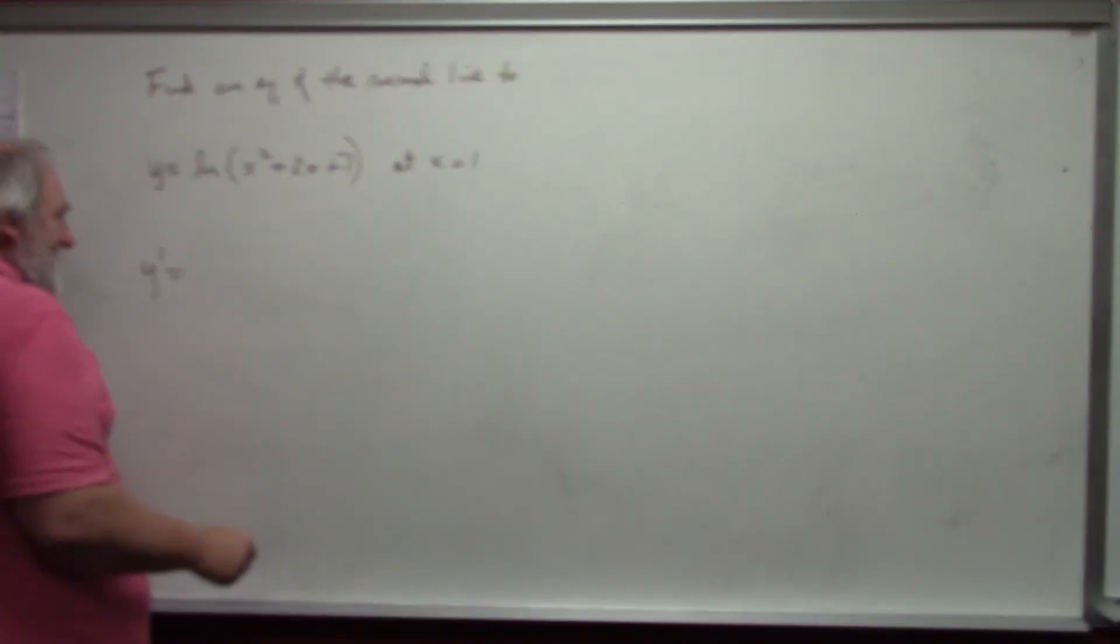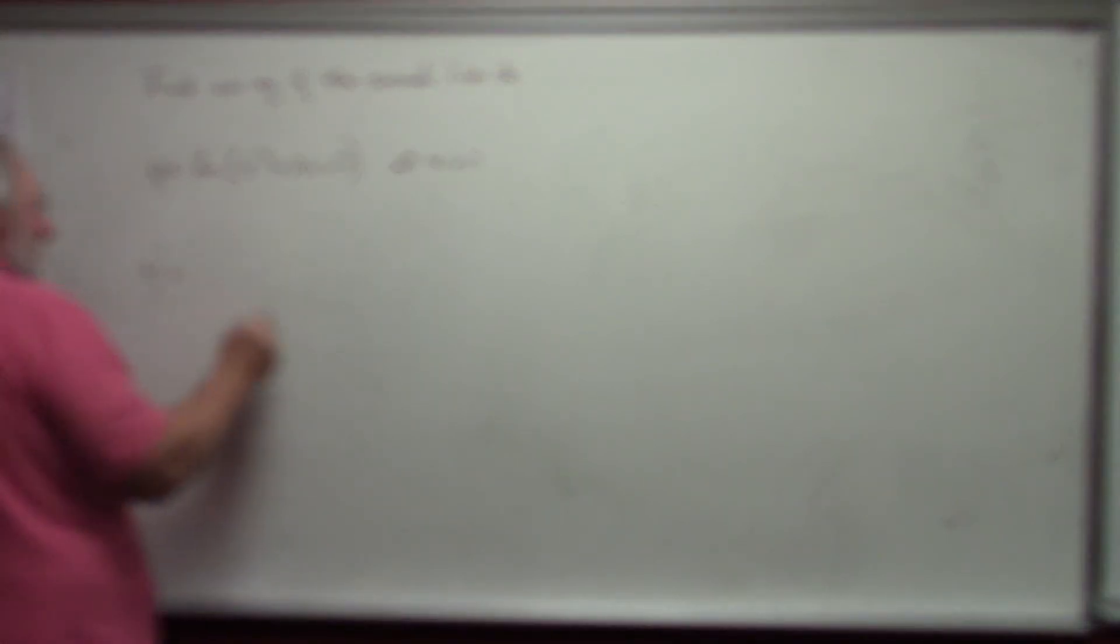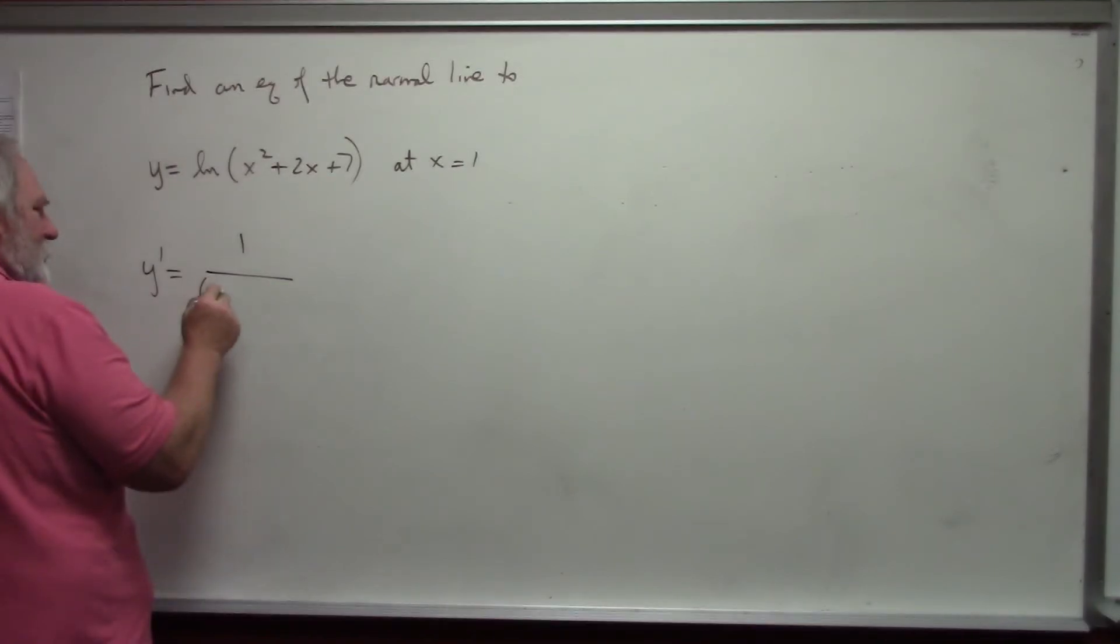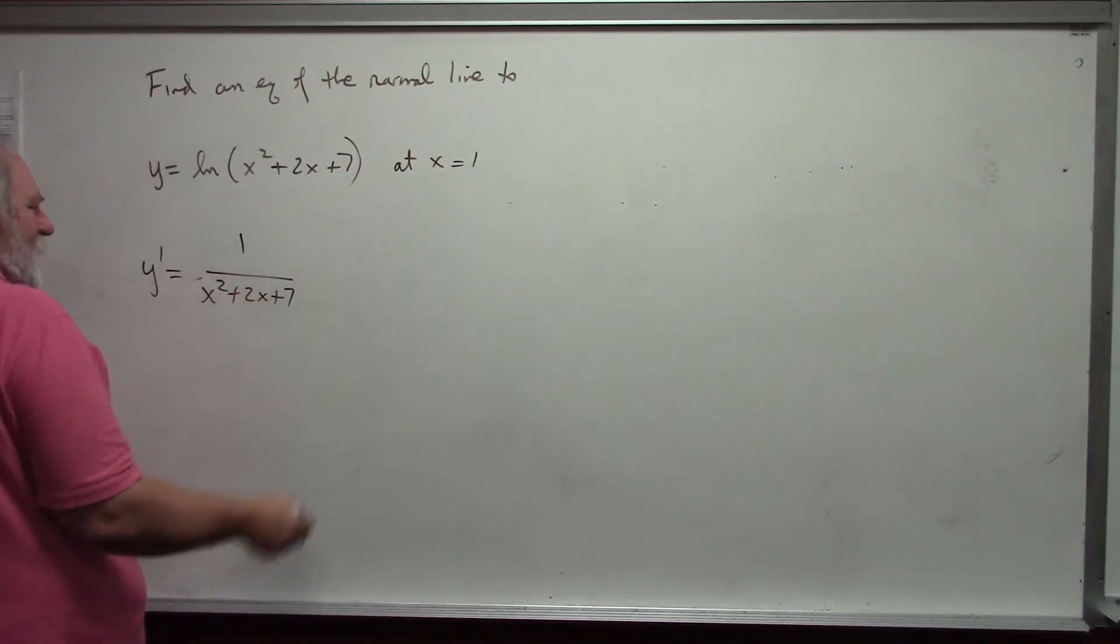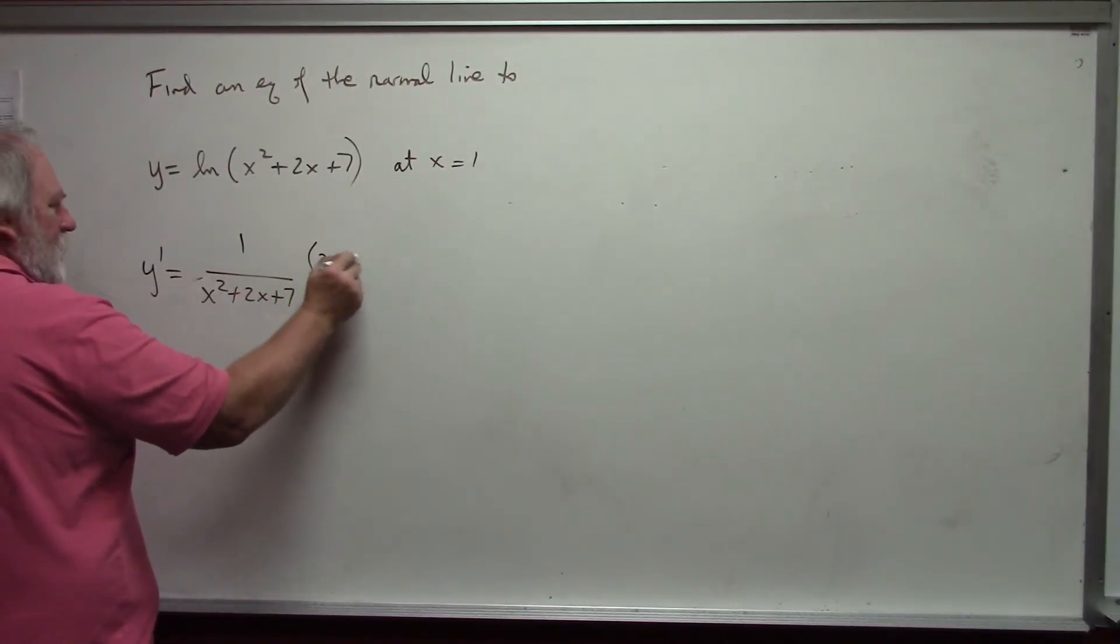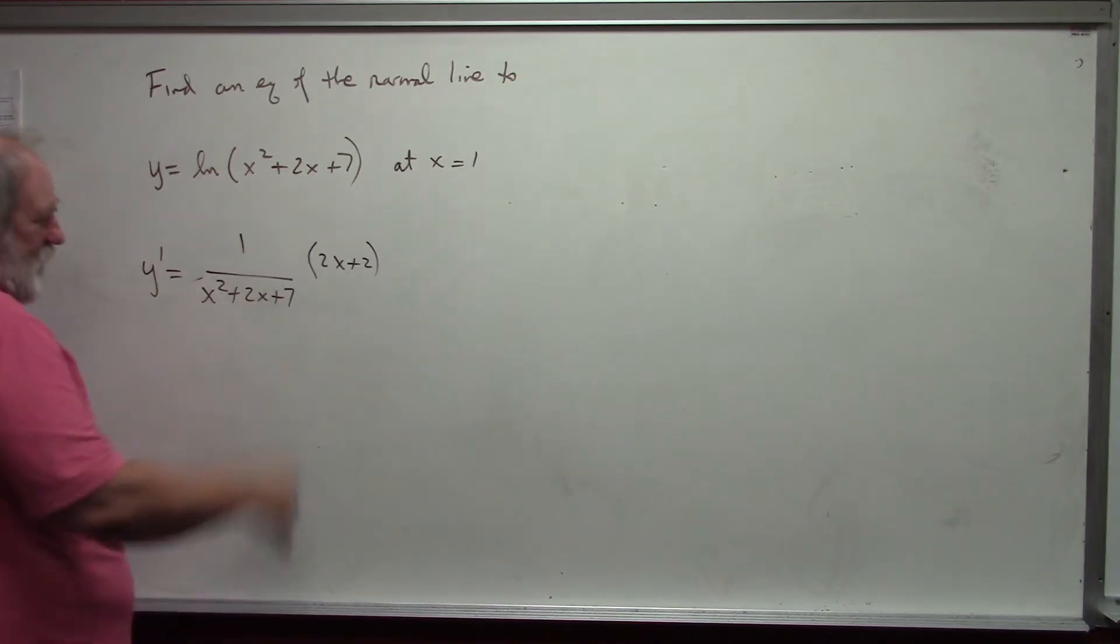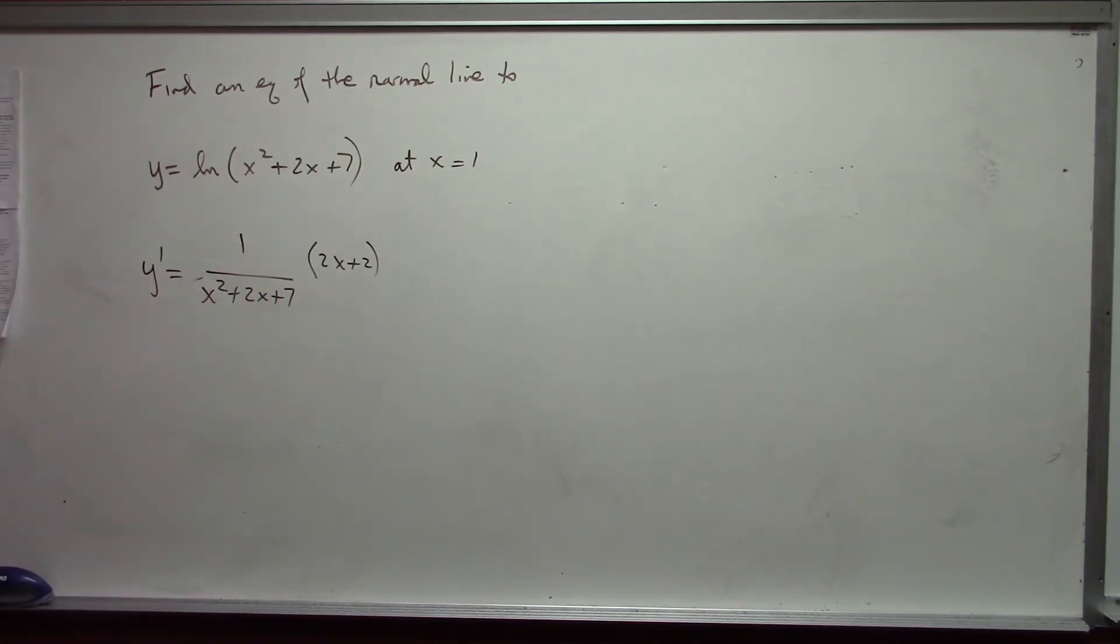Y prime is. Again, the derivative of the natural log would be 1 over times the derivative of the inside. 2x plus 2. Or, I could have just written 2x plus 2 over x squared plus 2x plus 7. And, I need the point.